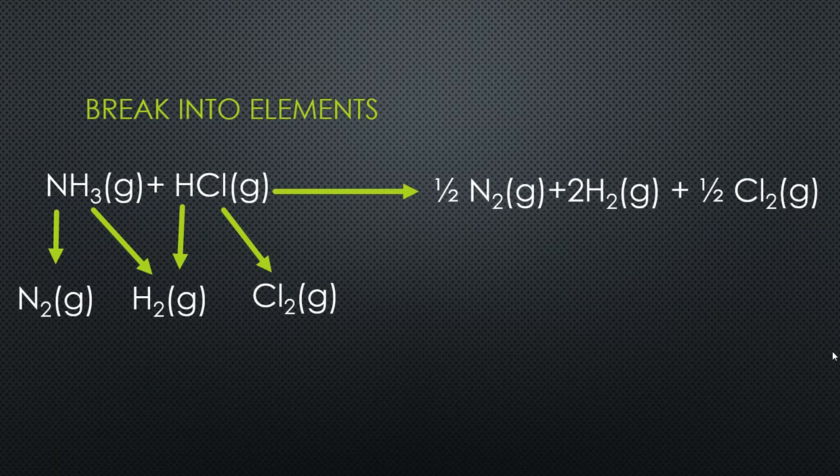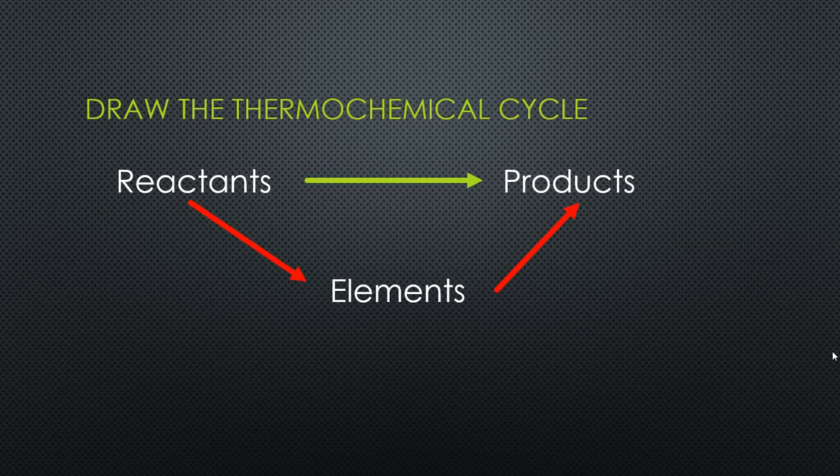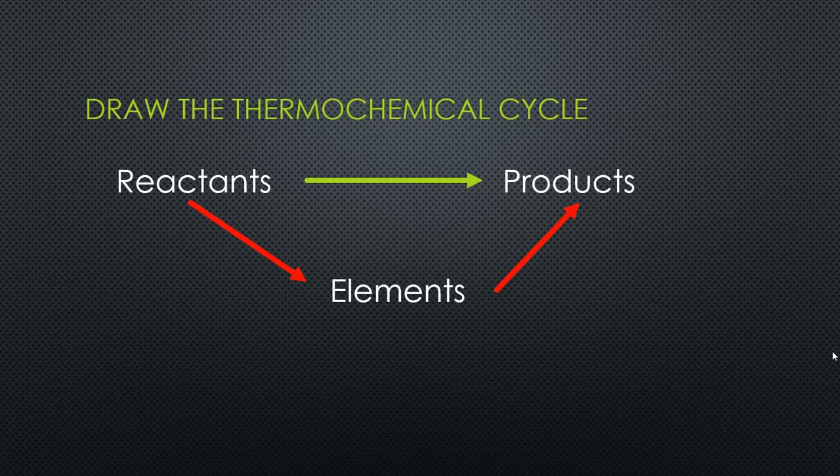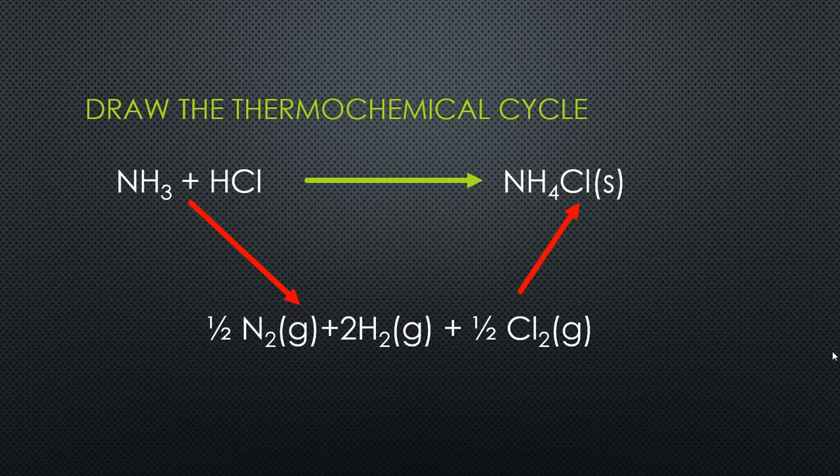We can substitute these into our thermochemical cycle. We've got that cycle there, and if we do the substitution—just replacing our reactants with reactants, products with products, and our elements with elements—we get this value.